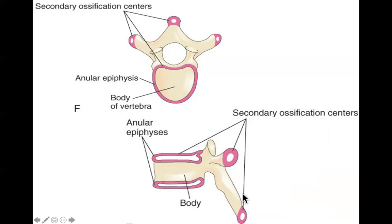The book says fusion happens at 25, but I disagree — the bones are going to be fully fused by the early twenties for guys, and a little bit sooner than that for girls. Remember my answer, not the book's. Early twenties, all the bones in the spine will be fully fused.